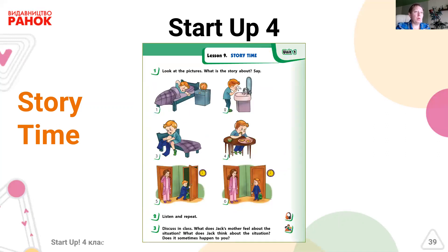Here is one more example of a Story Time lesson — another situation and another story. These stories are really interesting. One more advantage of this lesson is that pupils don't only look at pictures and predict — they also listen to the story. Then they can understand and analyze what they guessed right and what was wrong. After that, pupils can act out these stories. You can use Story Time lessons with great benefit for both you and your pupils.